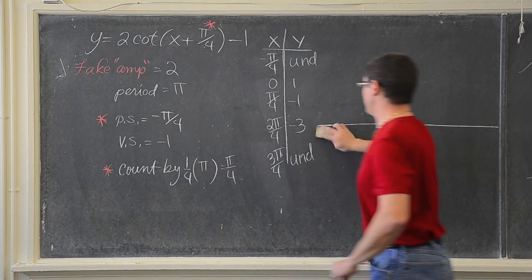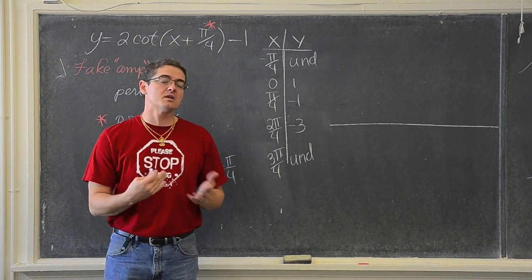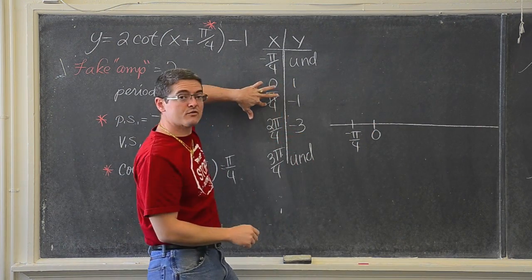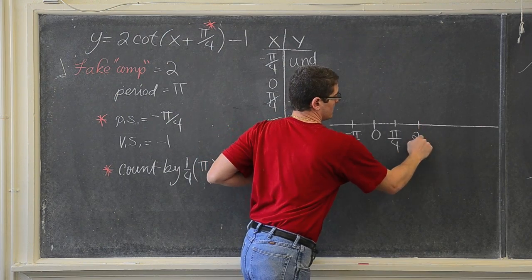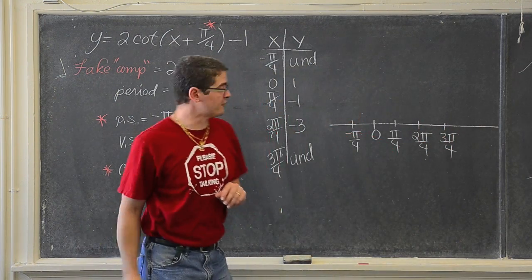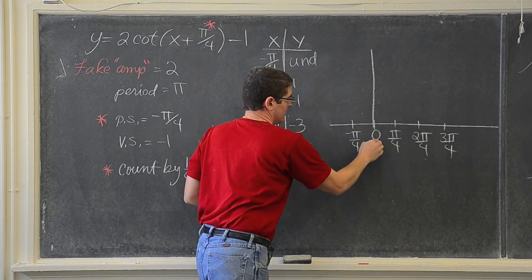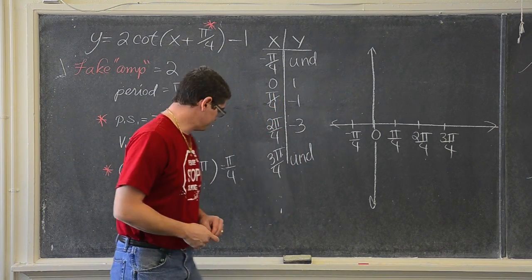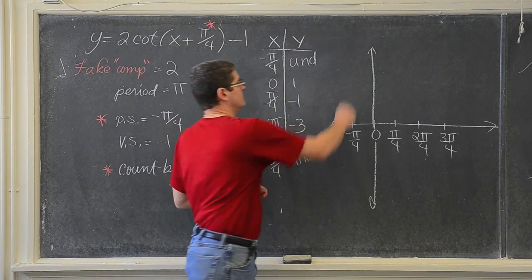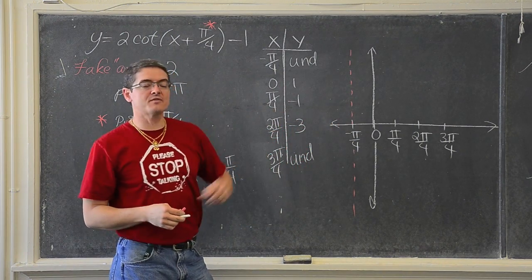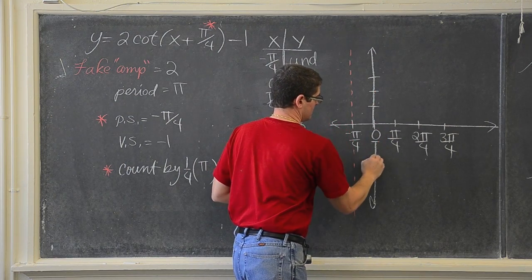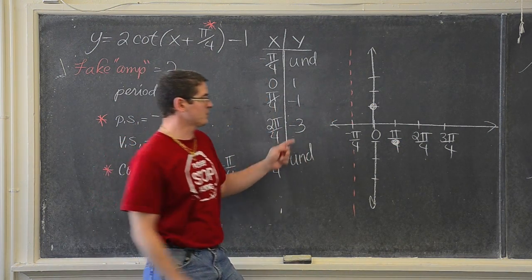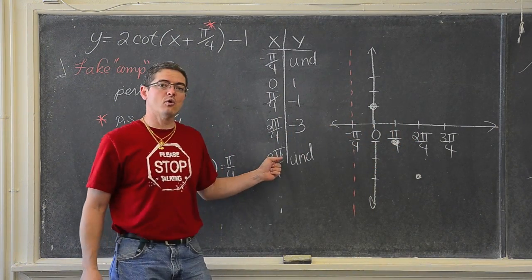Now that we have our t-table, let's set up the x-axis. We have -π/4, 0, π/4, 2π/4, and 3π/4. Find where zero is and place the y-axis there. We have a vertical asymptote at negative π/4. At x = 0 we have a y-value of 1. At π/4 we are at negative 1. At 2π/4 we are at negative 3. And at 3π/4 we have a vertical asymptote again.